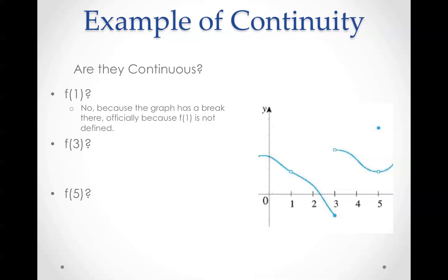So, f(1) - no, because the graph has a break there and officially because f(1) is not defined. What about f(3)? No, f(3) is defined, yet the limit does not exist because the left and right limits are different.